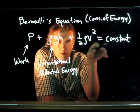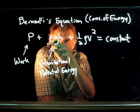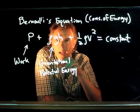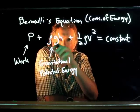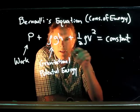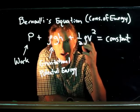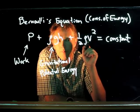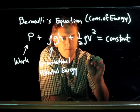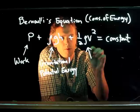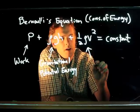And if we're clever with our dimensions here, we can write that as the density of the water times gravity times how high we lifted it. What about this last term, one-half rho v squared?